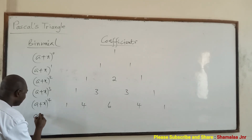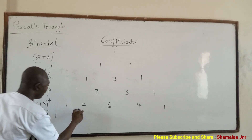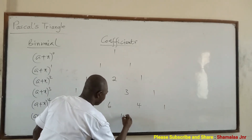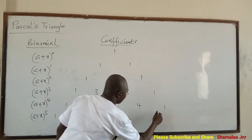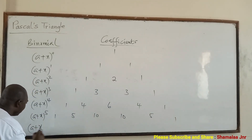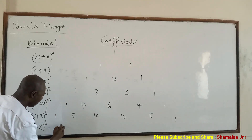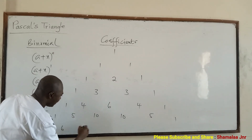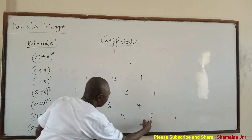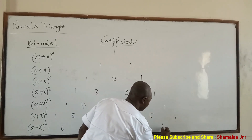For (e + x) raised to the power 5: you have 1 here, 1 plus 4 is 5, 4 plus 6 is 10, 6 plus 4 is 10, this is 5, this is 1. For (e + x) raised to the power 6: 1 plus 5 is 6, 5 plus 10 is 15, 10 plus 10 is 20, 10 plus 5 is 15, 5 plus 1 is 6, and then write this 1.